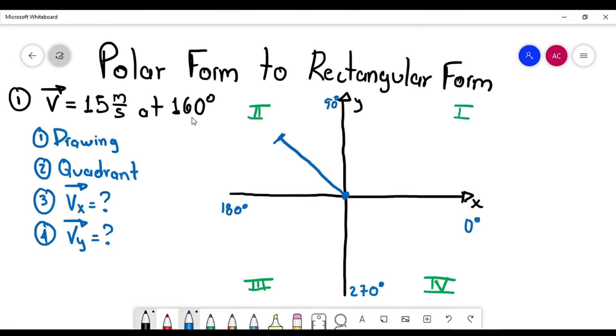This is the velocity vector. And the angle is this one. This is the angle over here. The angle, the total angle that is measured from 0 degrees.